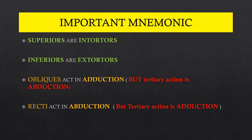To conclude with some mnemonics: superiors are always intorters — superior rectus and superior oblique both cause intorsion. Inferiors are always extortors — inferior rectus and inferior oblique both cause extorsion. Obliques act in adduction as their optimal testing position, but their tertiary action is abduction. The recti act in abduction as their optimal testing position, but their tertiary action is adduction. Thank you and have a nice day.